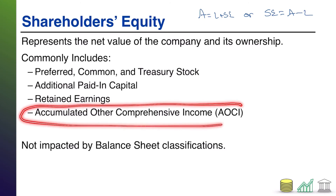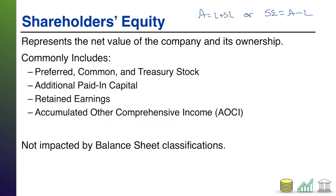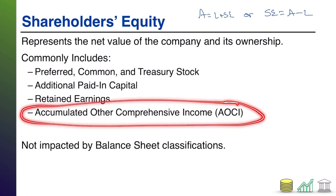Not something that introductory students are necessarily expected to know, but accumulated other comprehensive income, also known as AOCI, also shows up in the shareholders equity section. This is an account used for various changes in valuation of your assets that don't necessarily get recognized in the income statement due to various rules. For example, you might have an investment that is worth less or more than you originally paid for it, which you'd think would result in revenue or expense on the income statement. But because of various accounting rules, sometimes you may not be allowed to put it on the income statement yet — not until you get rid of it. Therefore, you've got to have a place to show investors that change in value, and that's what AOCI is used for.